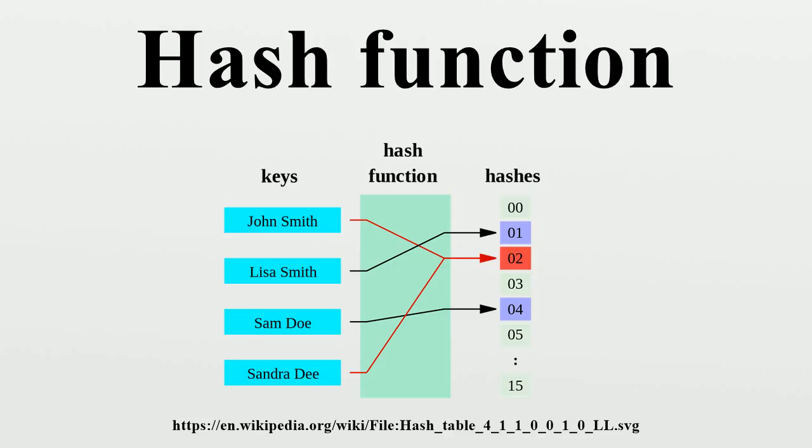Note that this criterion only requires the value to be uniformly distributed, not random in any sense. A good randomizing function is generally a good choice as a hash function, but the converse need not be true. Hash tables often contain only a small subset of the valid inputs. For instance, a club membership list may contain only a hundred or so member names, out of the very large set of all possible names. In these cases, the uniformity criterion should hold for almost all typical subsets of entries that may be found in the table, not just for the global set of all possible entries.